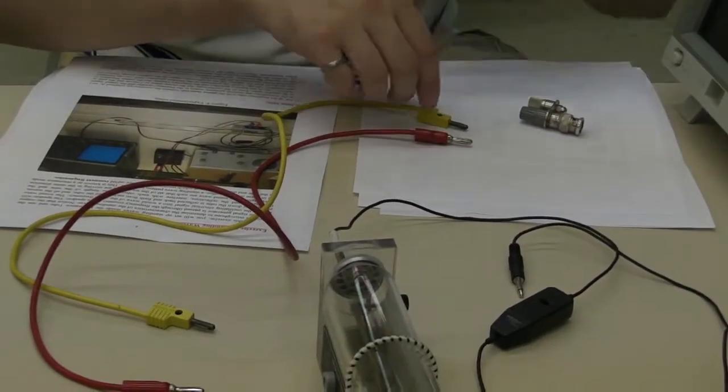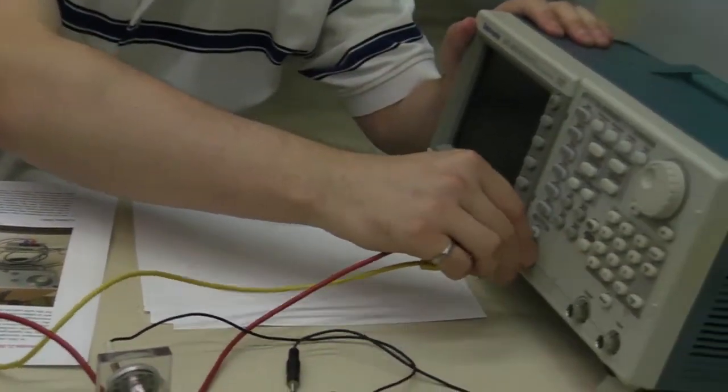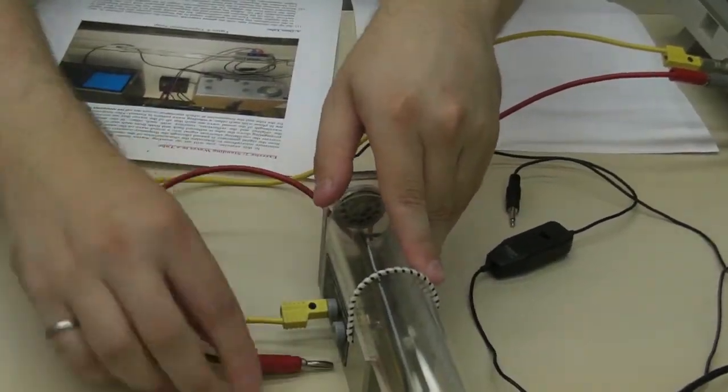To set up for this experiment, first you'll need to connect the function generator using the supplied adapter. Make sure not to attach it to the trigger output, and connect the other end of the banana cables to the speaker.